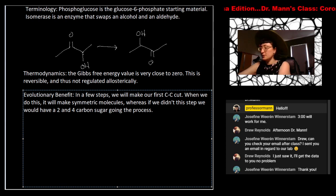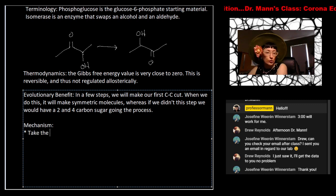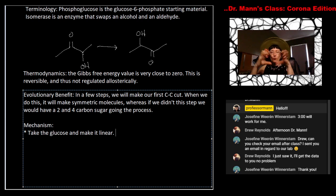So in a few steps, we will make our first carbon-carbon cut. Meaning we're going to break our first carbon-carbon bond out of the five that exist in glucose. So when we do this, it will make symmetric molecules. Whereas if we didn't do this step, we would have a two- and four-carbon sugar going through the process. So we basically end up, when we move these functional groups the way that we have, when we break the molecules, we will break them in half to give two three-carbon sugars, or two three-carbon molecules. If we didn't move the aldehyde, or the carbonyl, you would end up with a two- and a four-carbon unit instead. And so if you have two three-carbon units, you could basically use one set of enzymes to carry those through the rest of the glycolytic pathway.